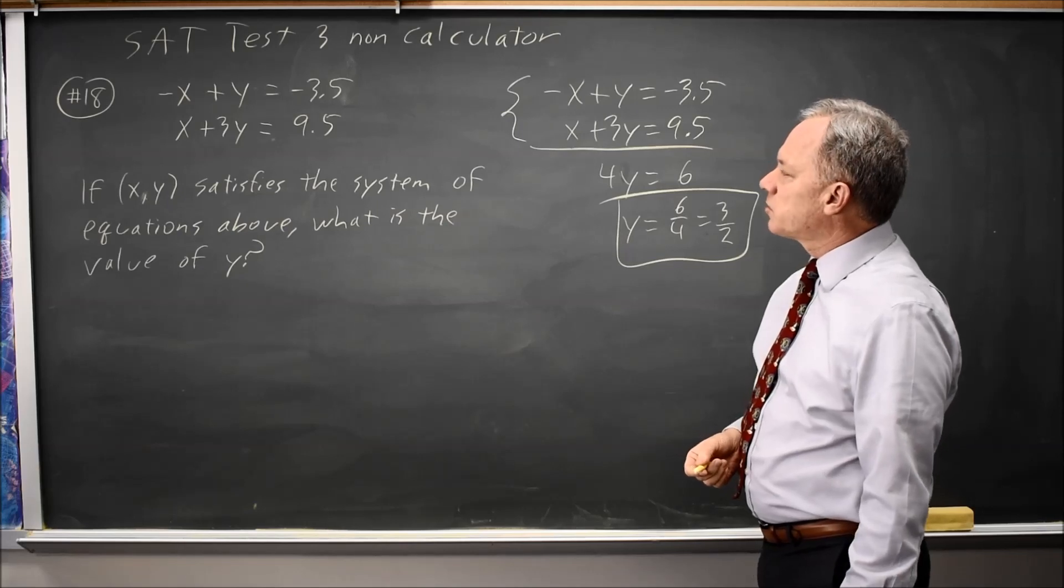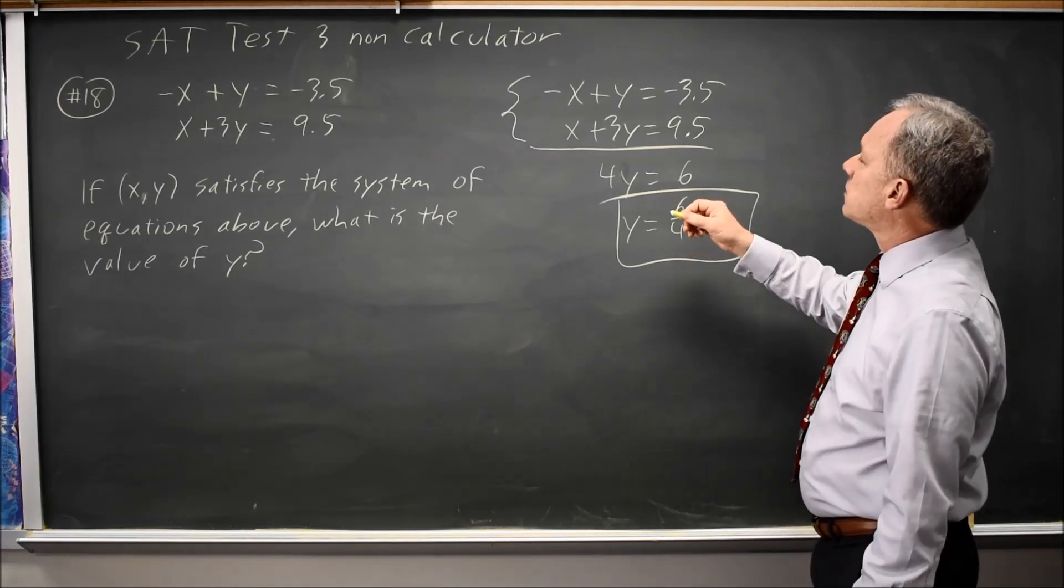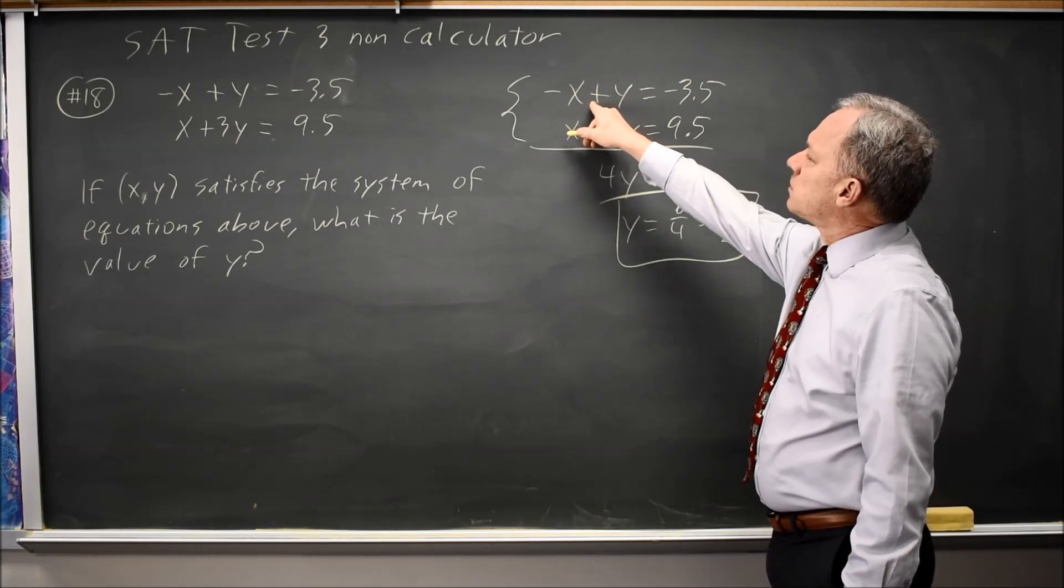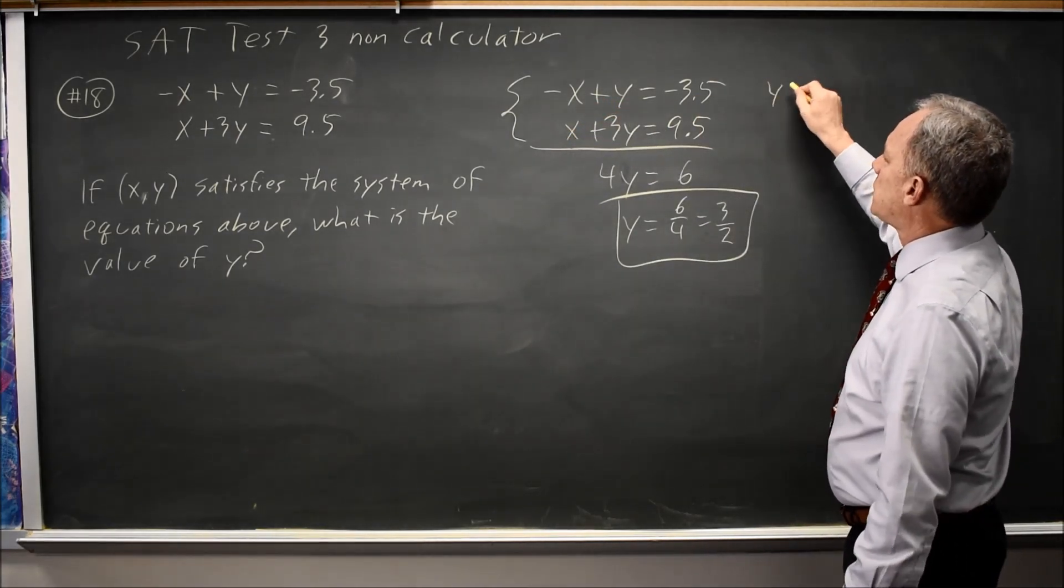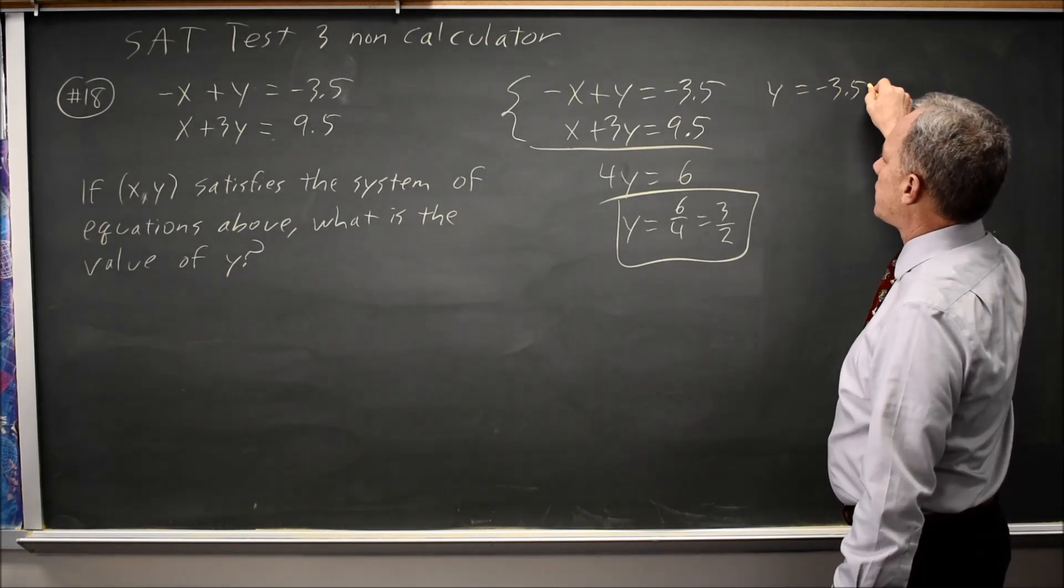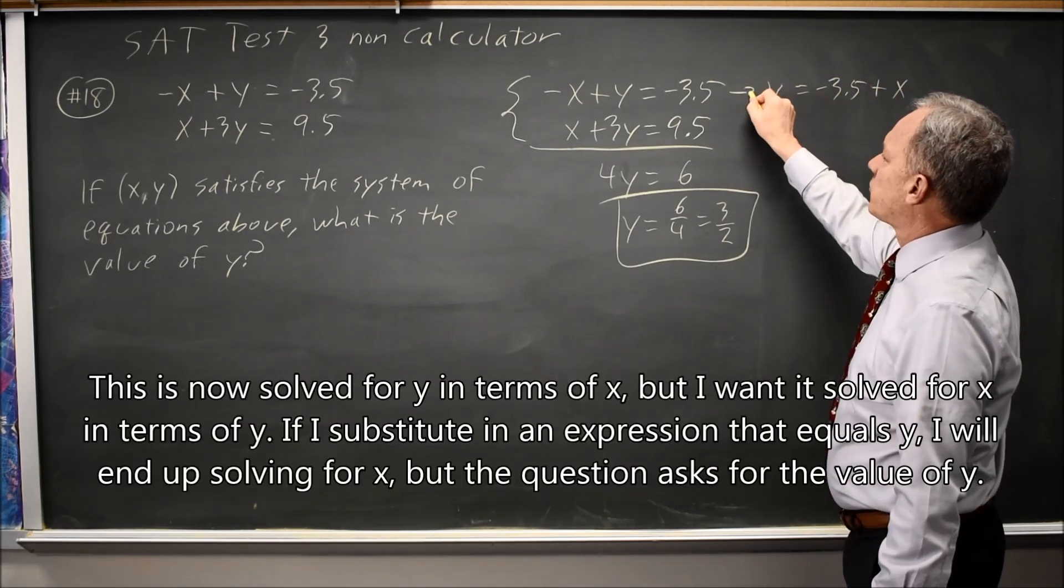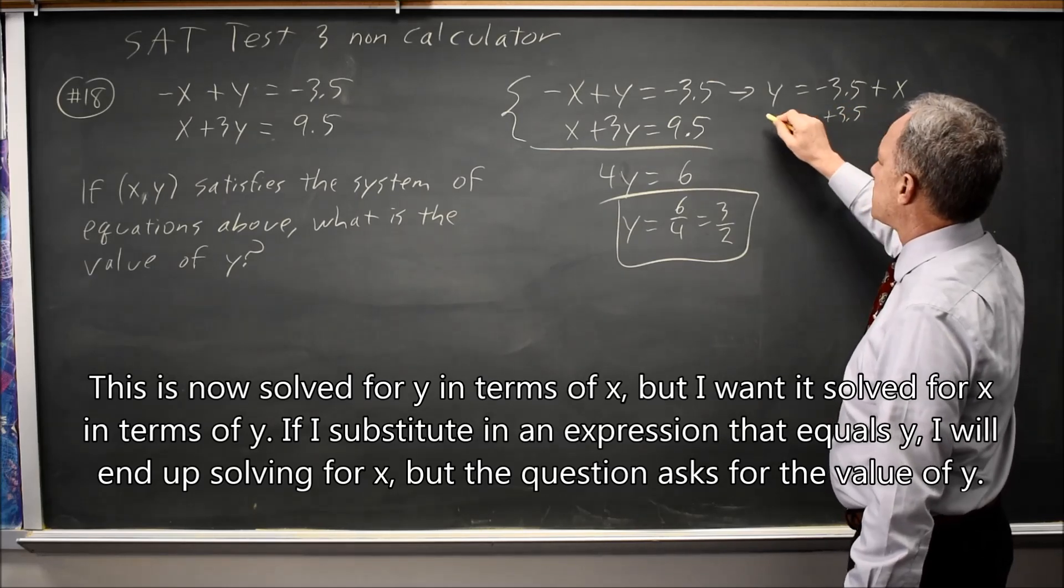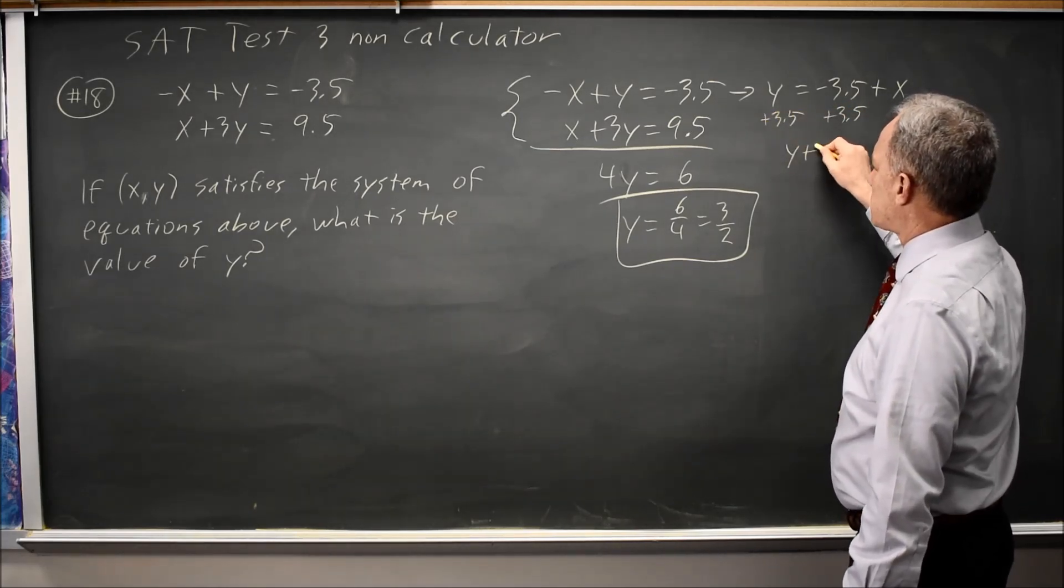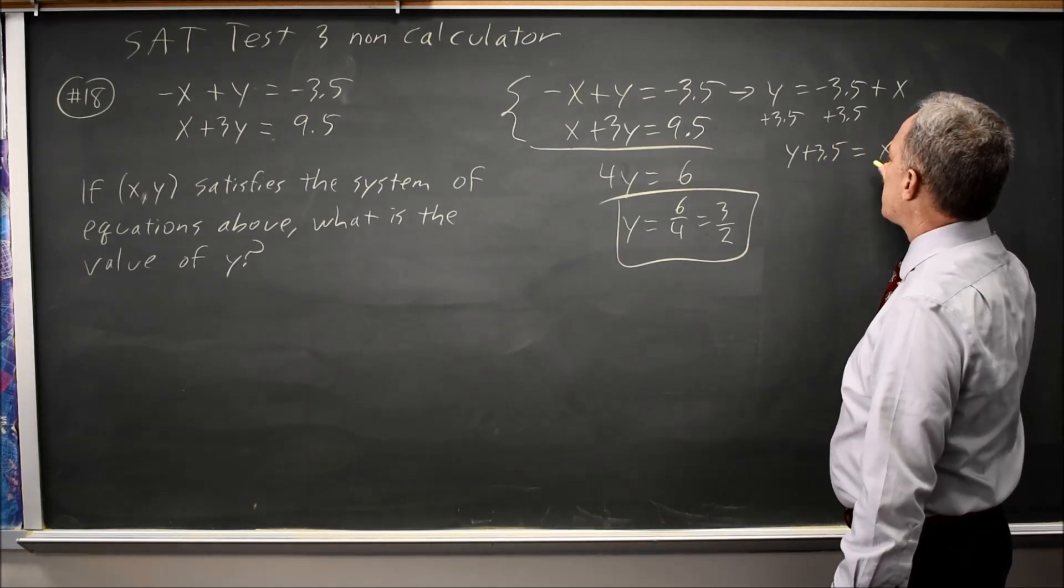Alternatively, since we're trying to solve for y, I could solve this equation for x. So y equals negative 3.5 plus x, if I add x to both sides and then add 3.5 to each side, and I get y plus 3.5 equals x.